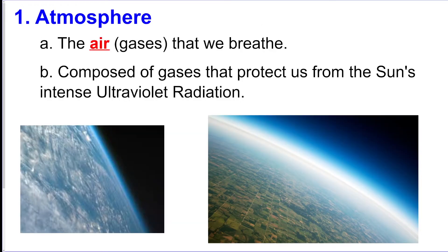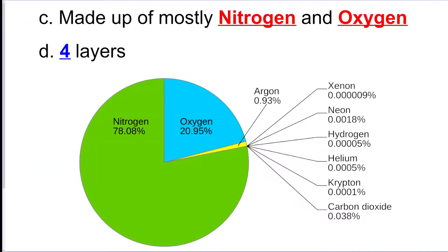The atmosphere is all the air and the gas that we breathe, and they're composed of very important gases that protect us from the Sun's intense UV radiation. So without these gases, which is actually called ozone here, we would get really bad sunburn, which would not be good. So the atmosphere is very important.